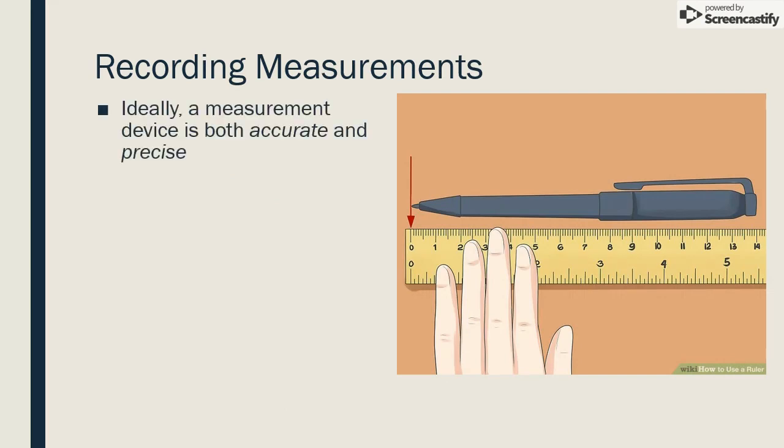A perfect measuring tool would be both accurate and precise, but most tools have limitations on how accurate or precise they can be. Accuracy is dependent on calibration to a standard. If a scale doesn't show zero pounds when there's no weight on it, then it's not calibrated and will not display an accurate measurement when weighing something.